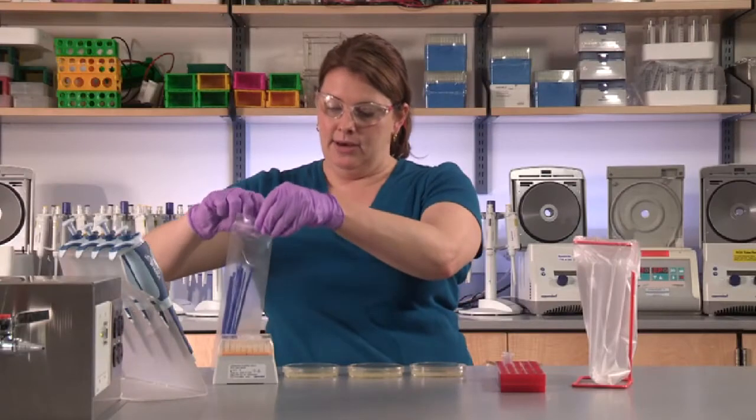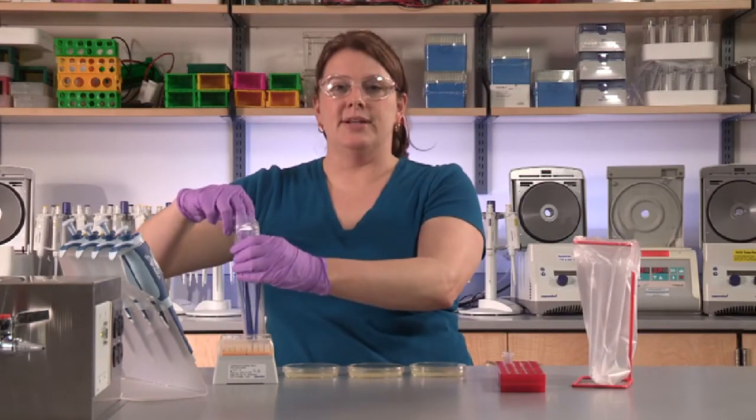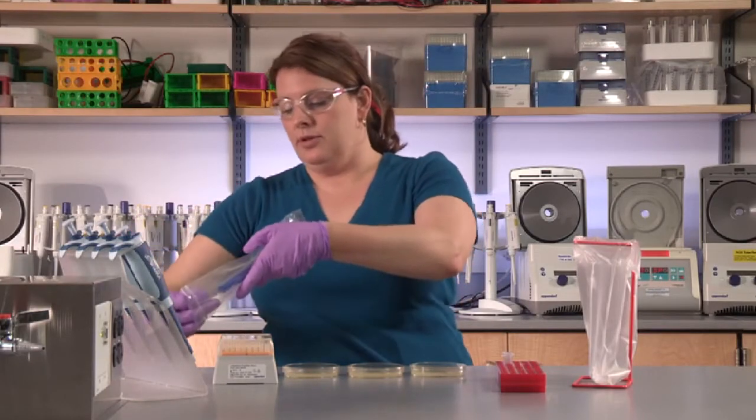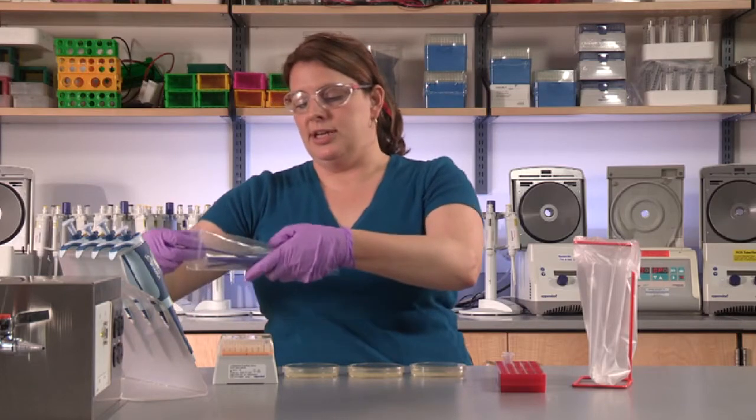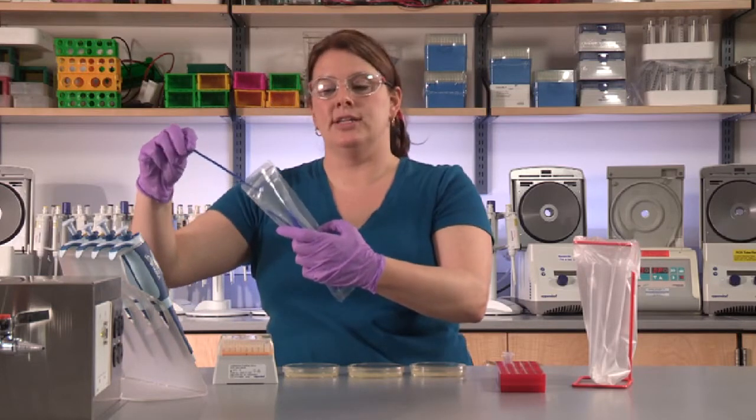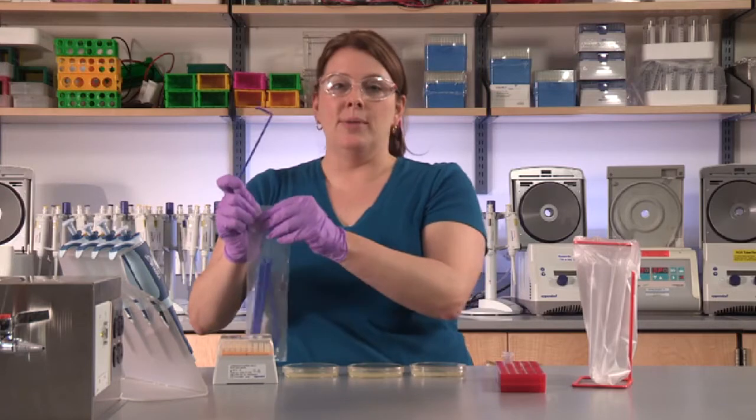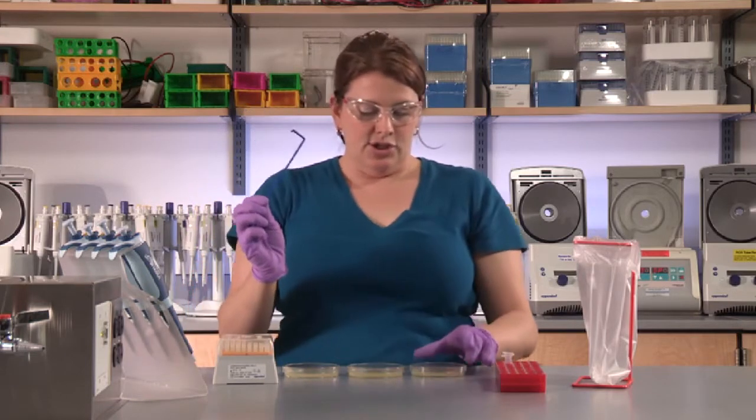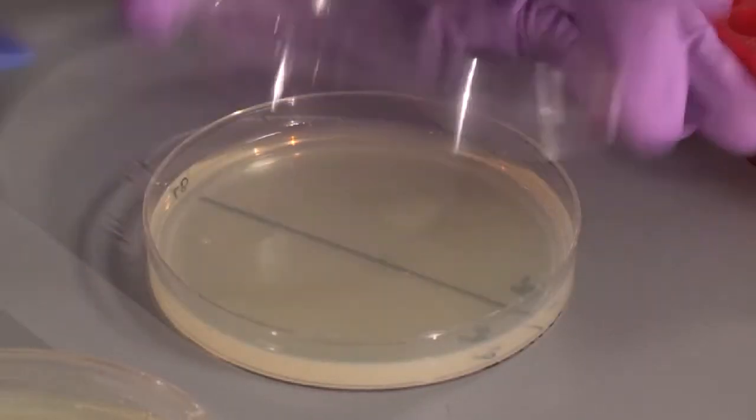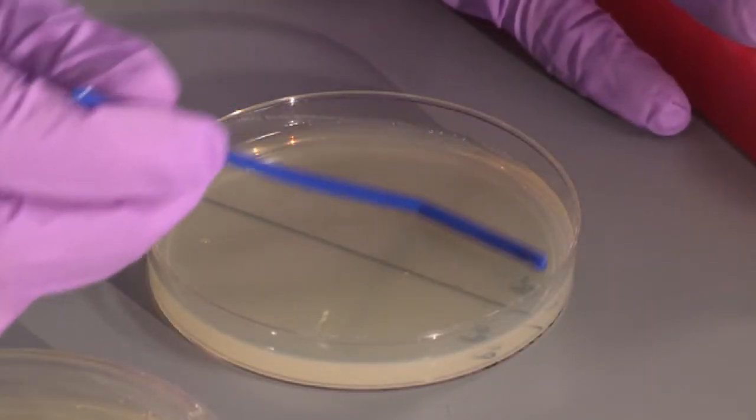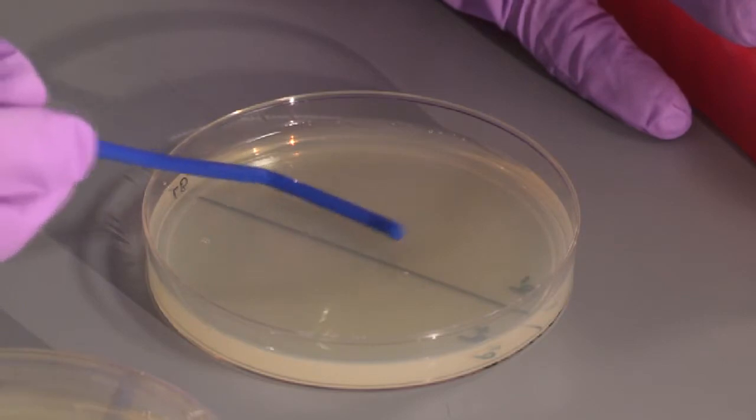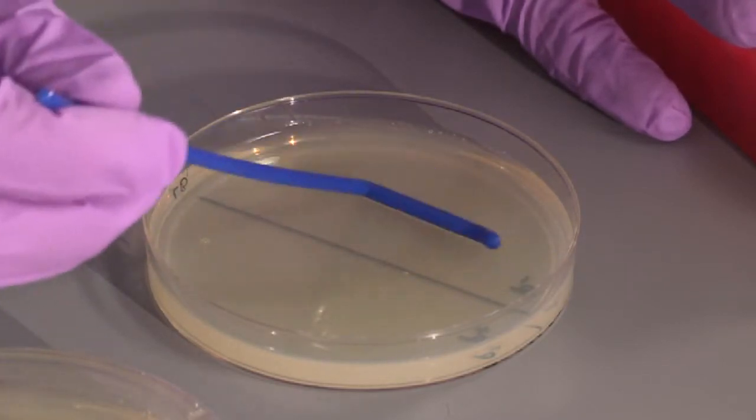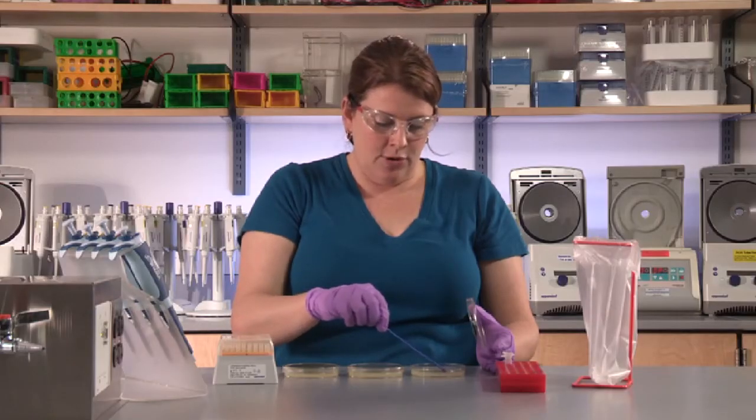Open up a packet that contains the bacterial cell spreaders. Use your fingertips to only touch the ends so as not to contaminate them. Do not place them down on the bench top as that would introduce contamination. Gently open the lids of the plates and very carefully spread the liquid using a gentle back-and-forth motion.